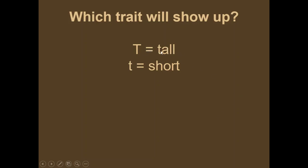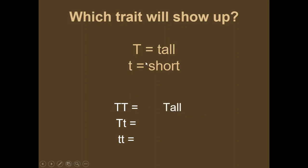Which trait shows up in these examples? Big T means tall, little t means short. If a big T came from one parent and a big T from the other, the offspring would be tall — because it has a big T, it shows that dominant trait. If one parent passes a big T and the other a little t, the offspring is still tall. If a little t comes from one parent and a little t from the other, the offspring would be short, because there is no big T, so the short trait shows.